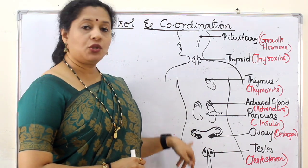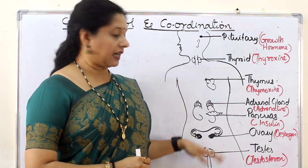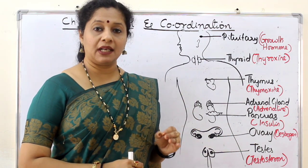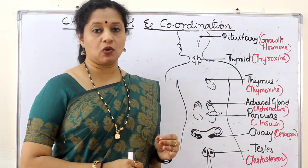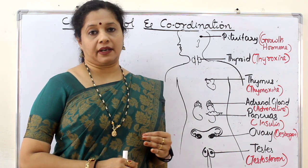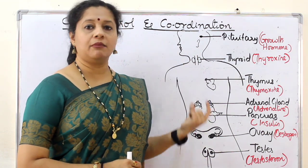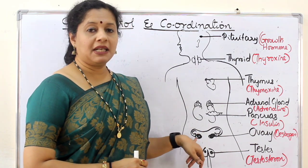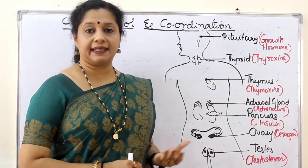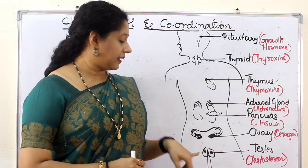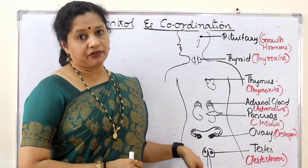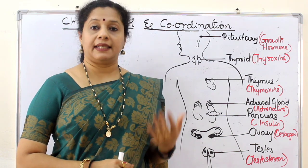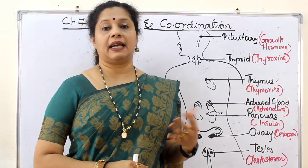Up to this point, all glands are the same in males and females. But when it comes to sex hormones, they are different. I used only one diagram to represent both to save time. In females, a pair of ovaries act as endocrine glands, whereas in males, a pair of testes act as endocrine glands. Now we will discuss each one and their functions.